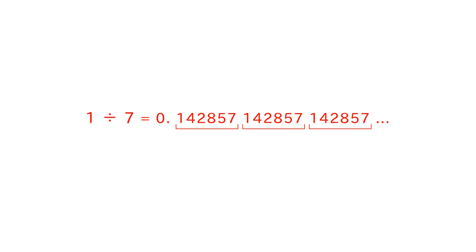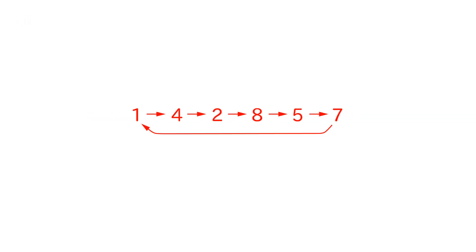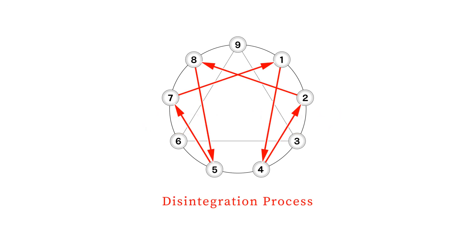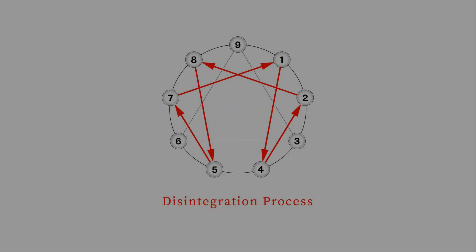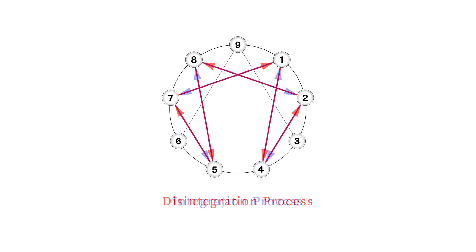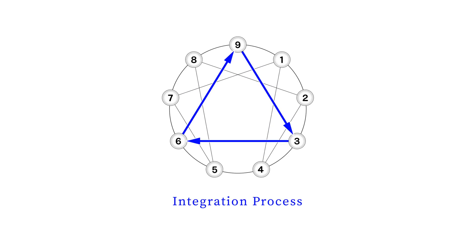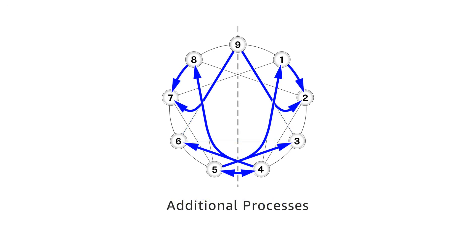When 1 is divided by 7, we get 0.142857, and it repeats. This recurring decimal, 142857, represents disintegration processes. The reason why we divide 1 by 7 will be discussed in module 1. By reversing these disintegration processes, integration processes emerge. In addition to these processes, this figure also represents integration processes. Furthermore, we discuss additional integration processes — these additional processes are not included in the traditional Enneagram theory.